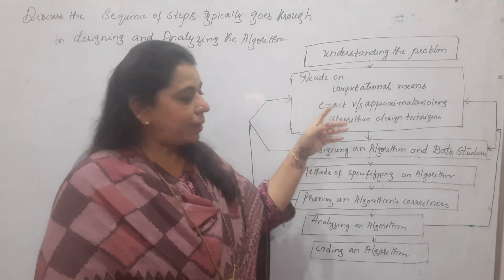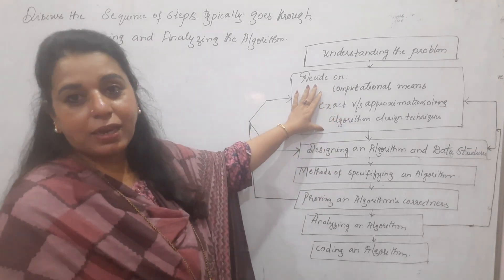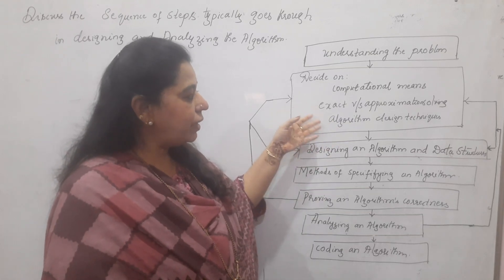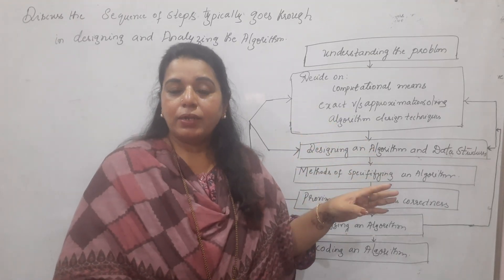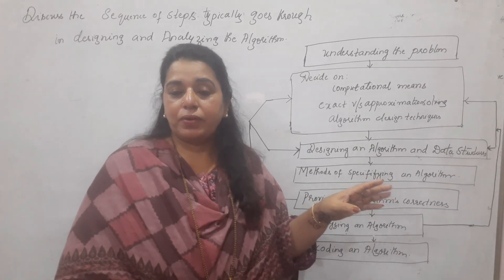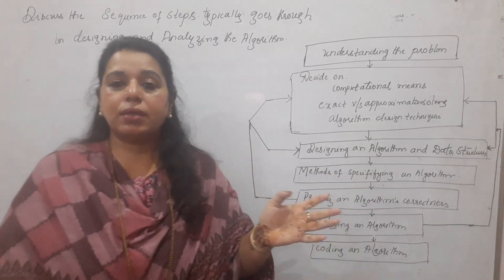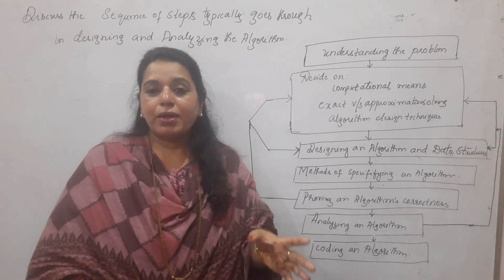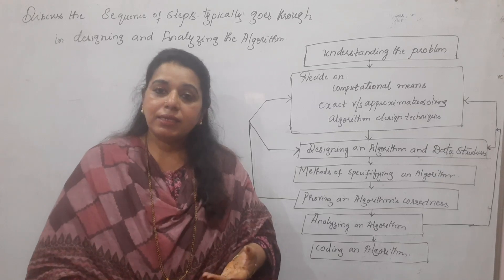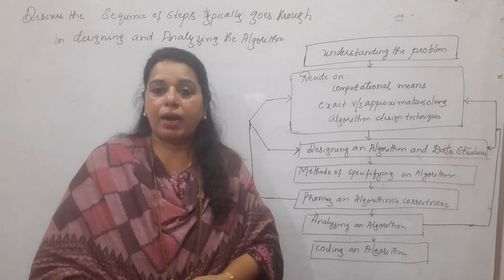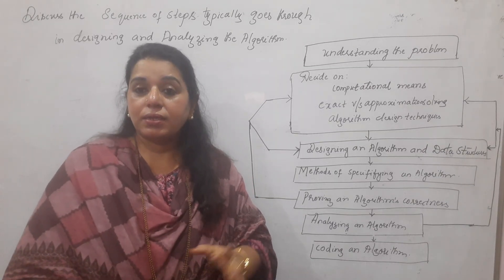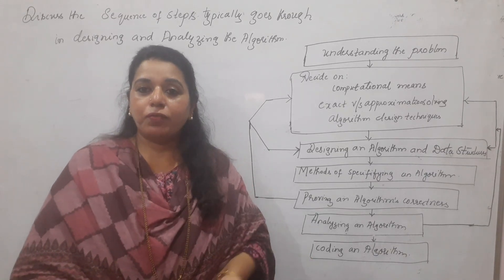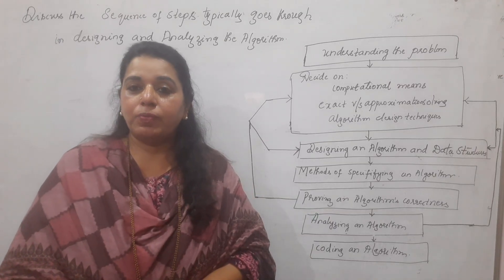In the second step, you need to look into three things: decide on computational means, exact versus approximate solving, and algorithm design techniques. When designing an algorithm and converting it into code, you should consider which machine it runs on — what are the device specifications, does it have the required hardware and software? For present devices, speed and memory are generally not a problem.